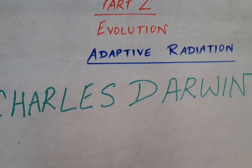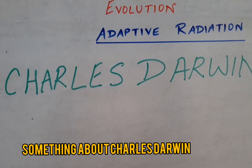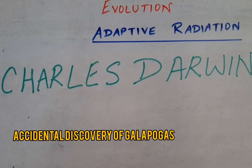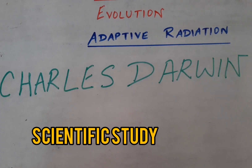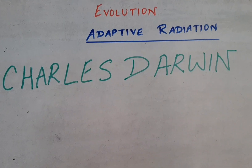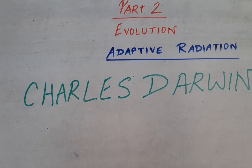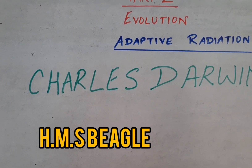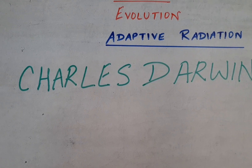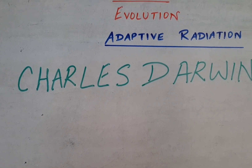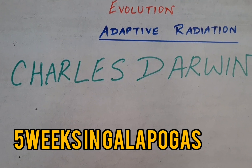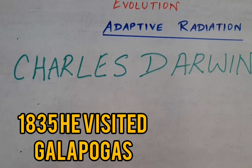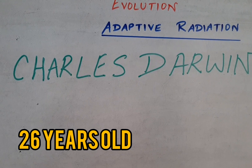Before making you understand what is adaptive radiation, let me discuss something about Charles Darwin and his discovery of the Galapagos Islands where he made his scientific studies. Charles Darwin, for nearly 5 years, circumnavigated the globe aboard HMS Beagle. He spent only 5 weeks on the Galapagos Islands. He went to the Galapagos in 1835 and at that time he was only 26 years old.